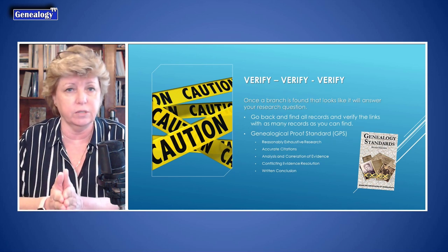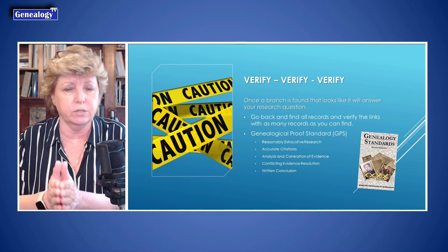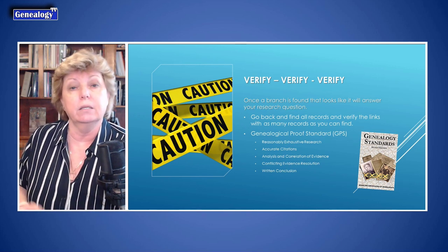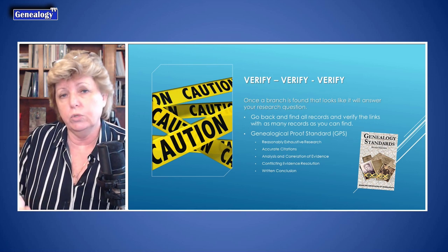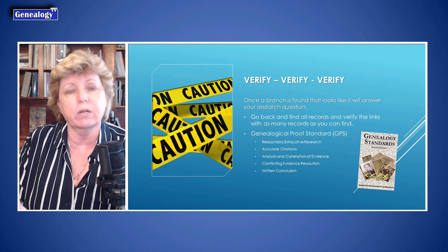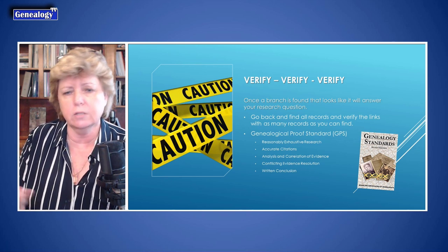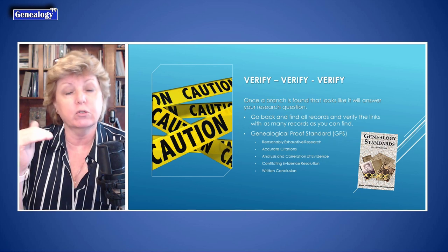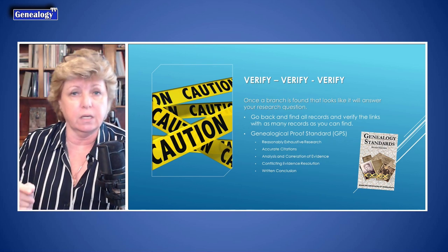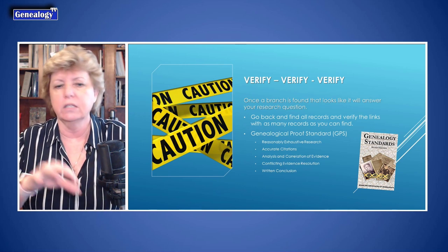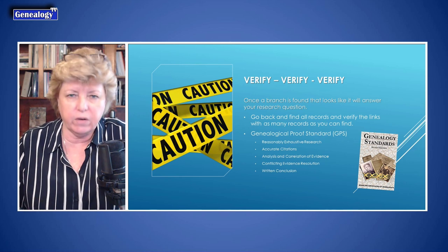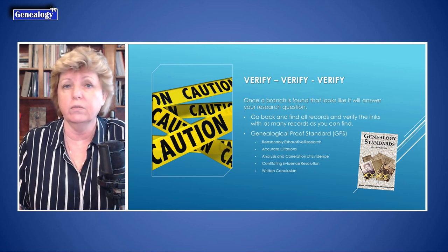You can do this easily with census records, Bible records, church records, or even obituaries. When you go back to do your reasonably exhaustive research, that's part of the genealogical proof standards — also known as the GPS. The very first rule of the GPS is reasonably exhaustive research, basically turning over every rock to find all the records. Then you can further verify or disprove the linkage — it could be that the one record you pulled was wrong and all the other records tell a different story.